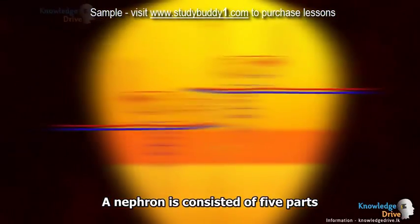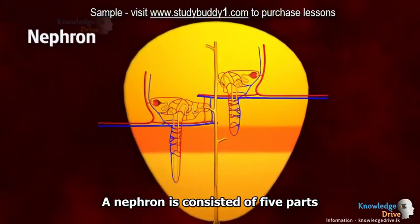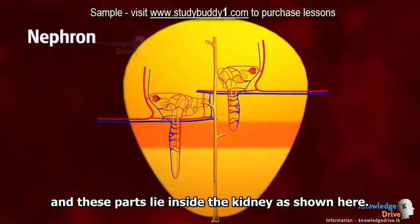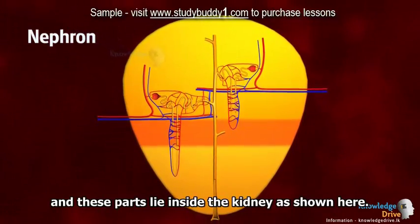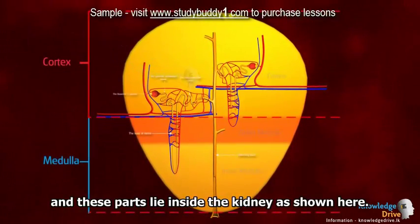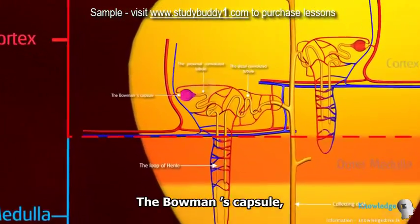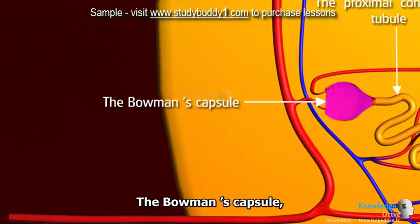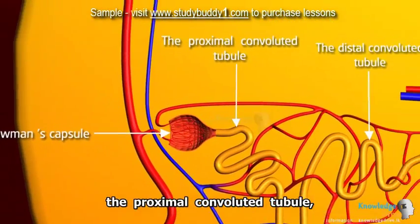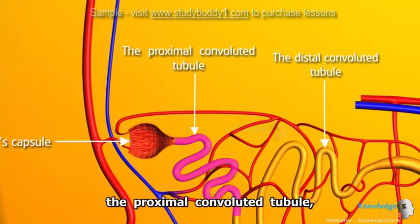A nephron consists of five parts, and these parts lie inside the kidney as shown here. The Bowman's capsule, the proximal convoluted tubule.